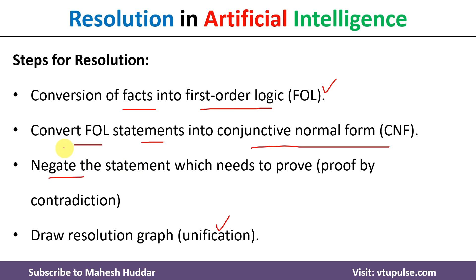In the next video, I will discuss how to convert these first order logic statements into conjunctive normal form. Once converted, we need to negate the statement to be proved and then draw the resolution graph. Links to those videos will be placed in the description below. I hope the concept of converting facts into first order logic is clear.